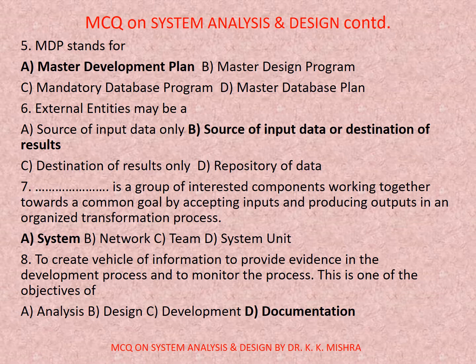Question number seven: Dash is a group of interested components working together towards a common goal by accepting inputs and producing outputs in an organized transformation process. Options are: a) system, b) network, c) team, d) system unit. Correct option is a) system.